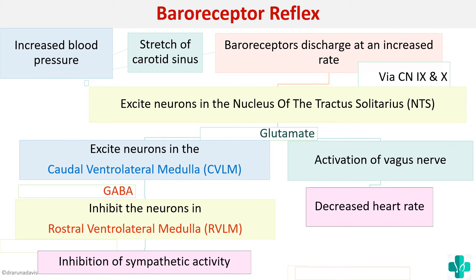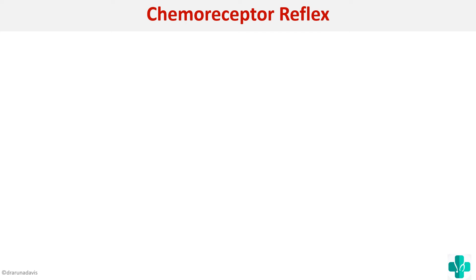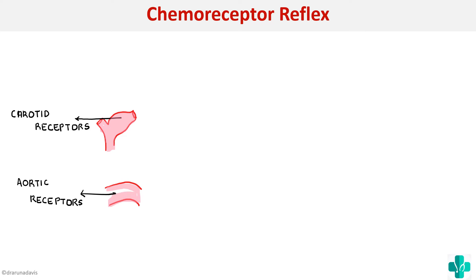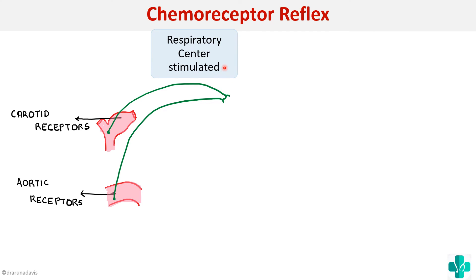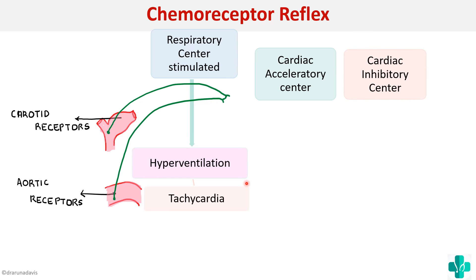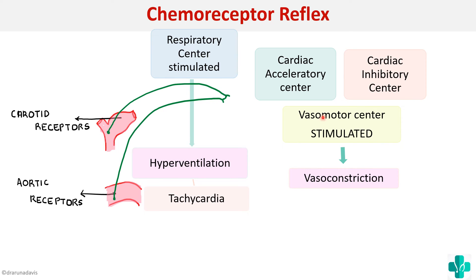Next is the chemoreceptor reflex. Chemoreceptors also have carotid and aortic receptors, which via the glossopharyngeal and vagus nerves send inputs to the medullary centers. When there is a fall in BP, there will be a decrease in partial pressure of oxygen and an increase in partial pressure of carbon dioxide. This is detected by respiratory centers, stimulating hyperventilation and tachycardia. The cardiovascular medullary centers — cardiac acceleratory center, cardiac inhibitory center, and vasomotor center — are also activated, causing intense vasoconstriction.